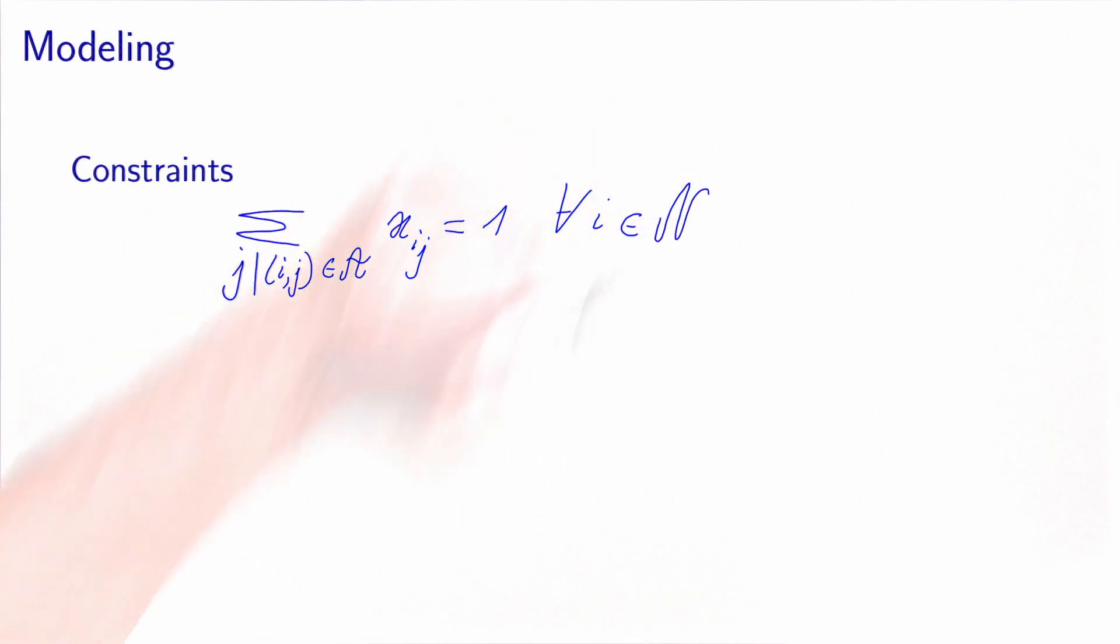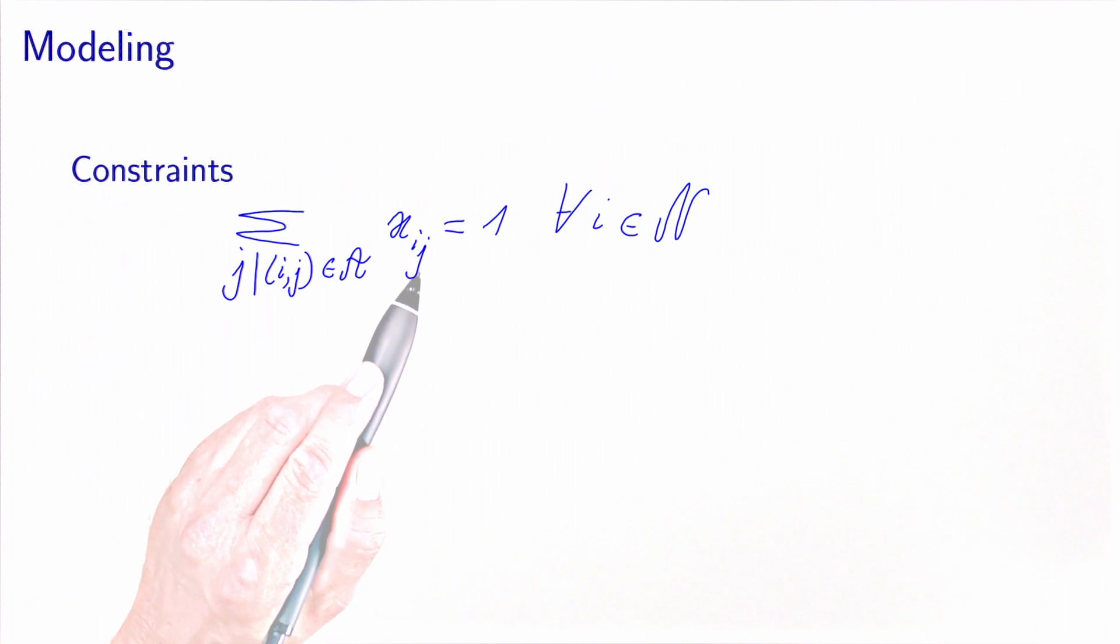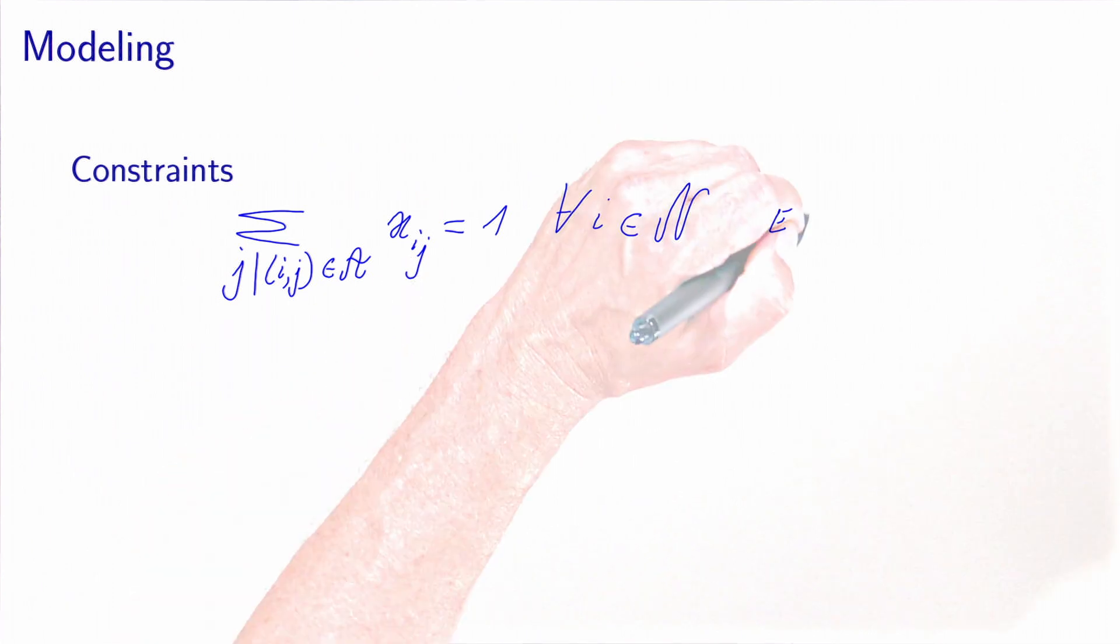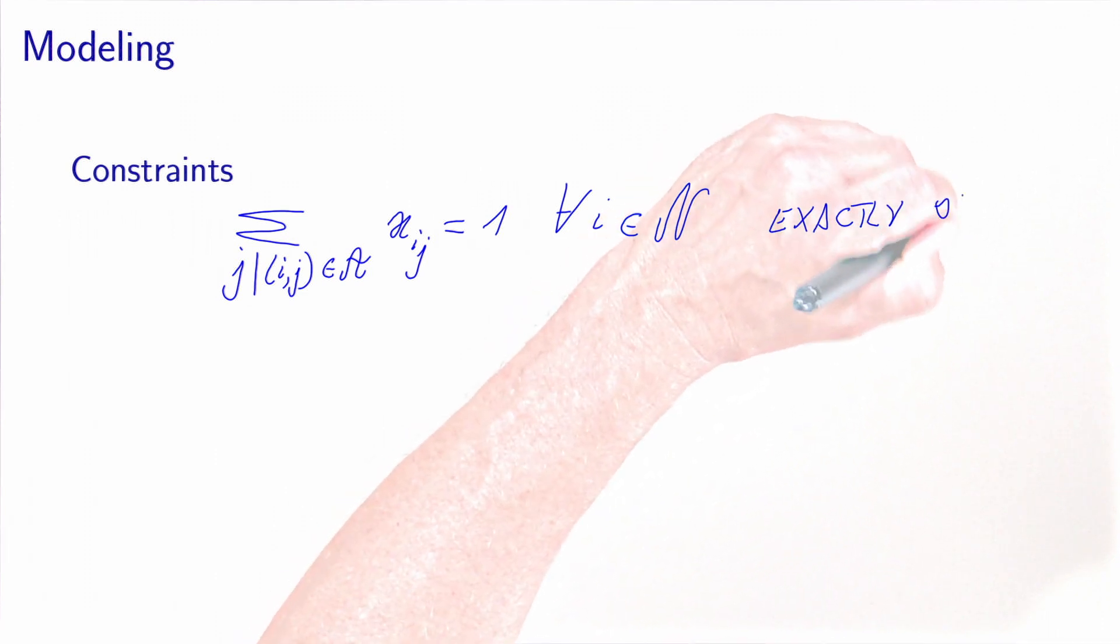Now we need to include the constraints. The first constraint says that we need each city to have exactly one successor in the tour. We can write this as: the sum over j such that (i,j) belongs to the network of xij must be equal to one for all nodes i. This constraint says that we have exactly one successor.